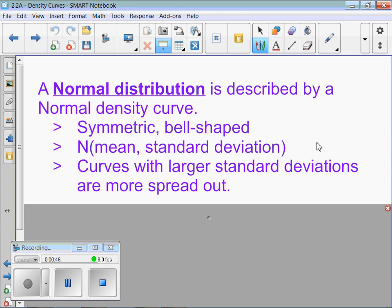Sometimes, it won't actually say it's normal. It will give you the symbols, and it might actually put numbers in like this. That means the distribution is normal, with a mean of 60 and a standard deviation of 5. Curves with larger standard deviations are more spread out. If you have a smaller standard deviation, you're going to be a taller curve.